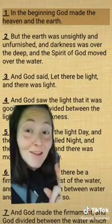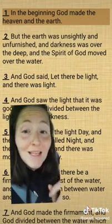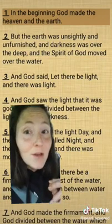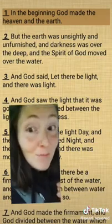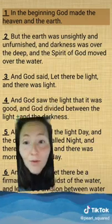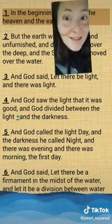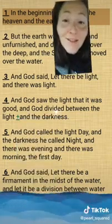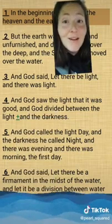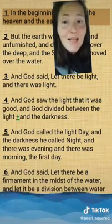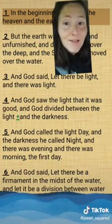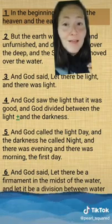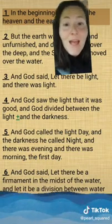Let's see what the Word has to say. Everyone has heard this account, but let's read it line for line. In the beginning, God made the heaven and the earth, but the earth was unsightly and unfurnished, and the darkness was over the deep. The Spirit of God moved over the water. God said let there be light, and there was light. God divided between the light and the darkness, calling the light day and the darkness night. There was evening and morning — the first day.